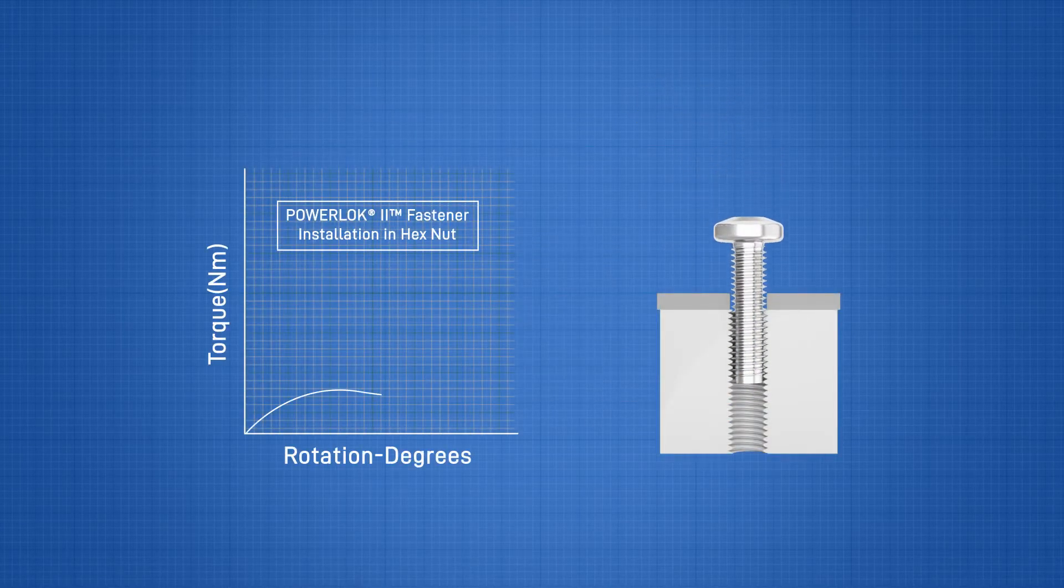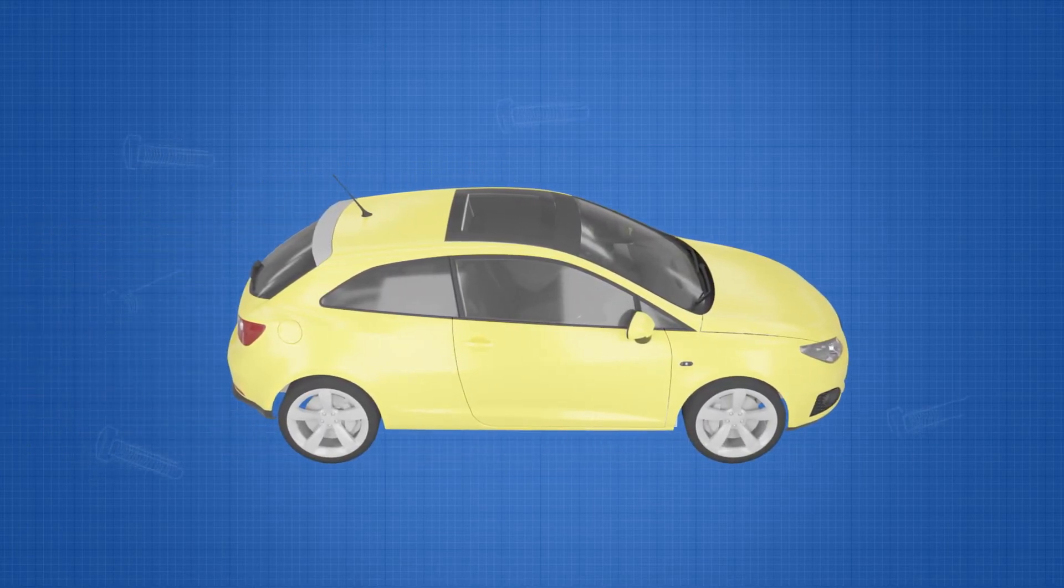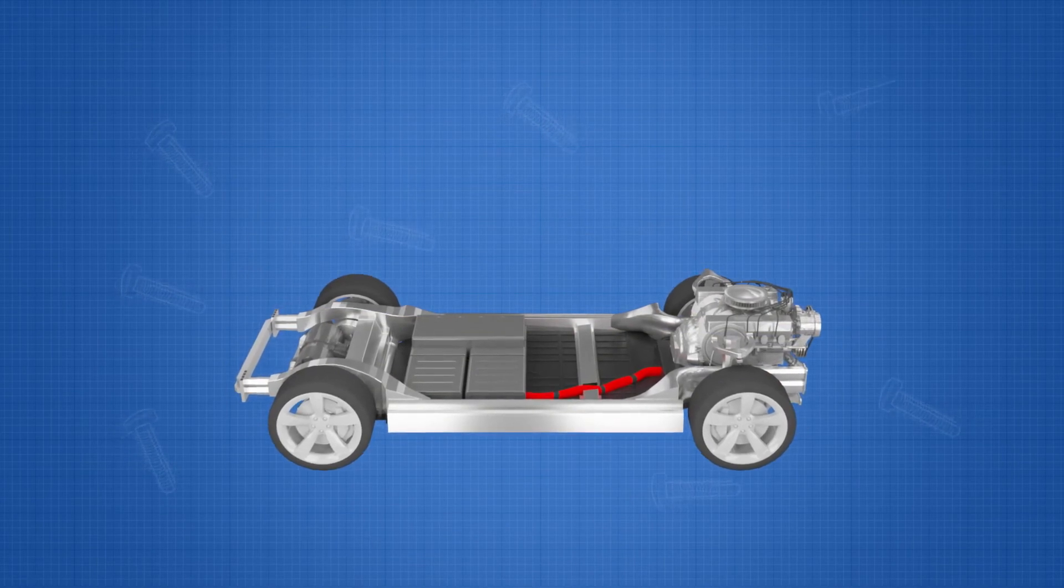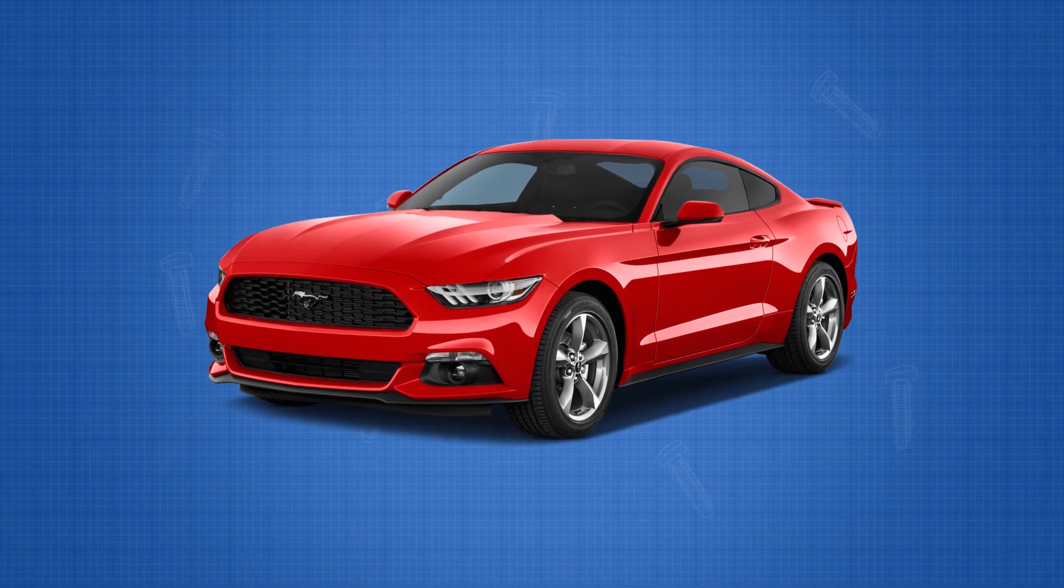PowerLock 2 screws provide metal-to-metal contact in the nut member. A joint using PowerLock 2 screws provides superior grounding in joints of electric vehicles, as well as for grounding applications in internal combustion engine vehicles.